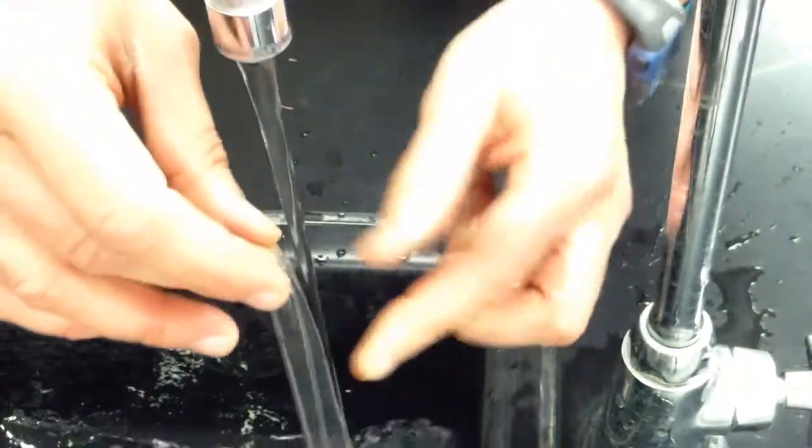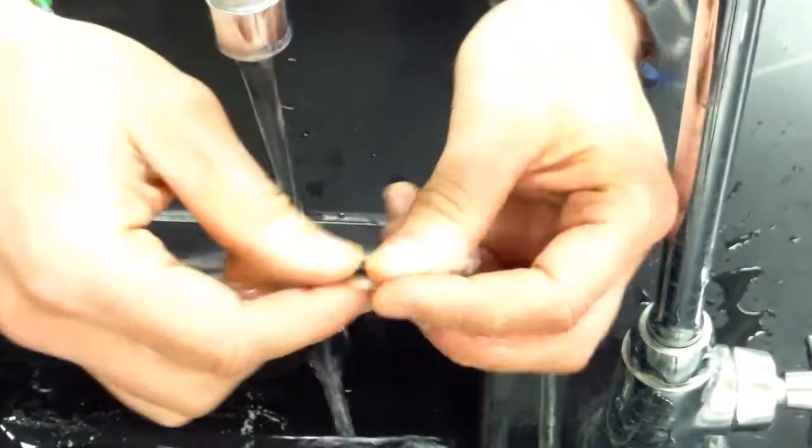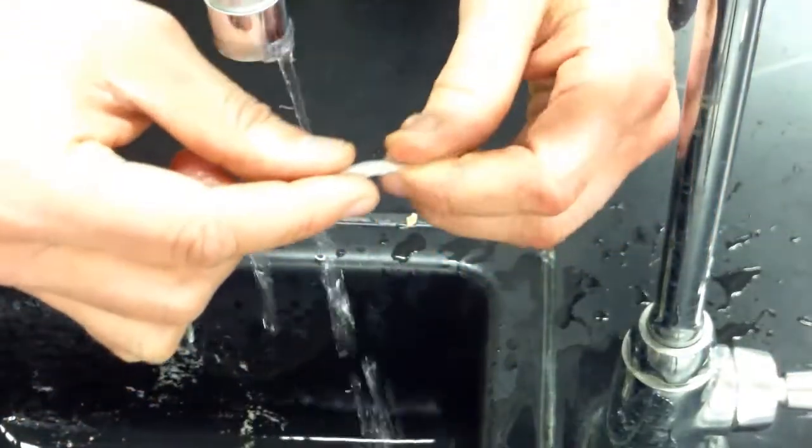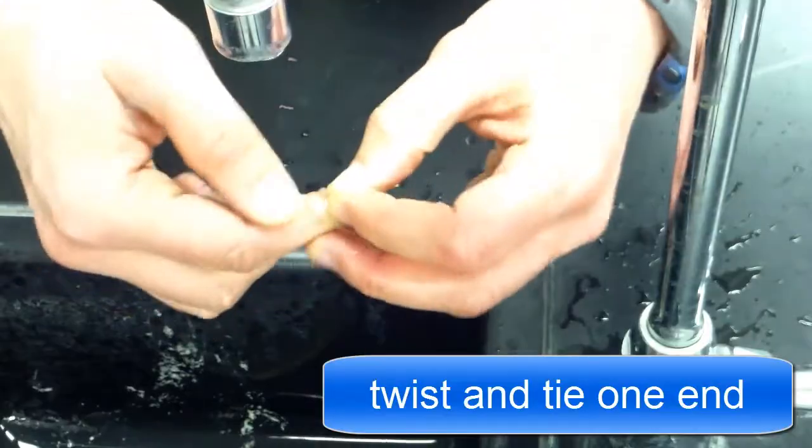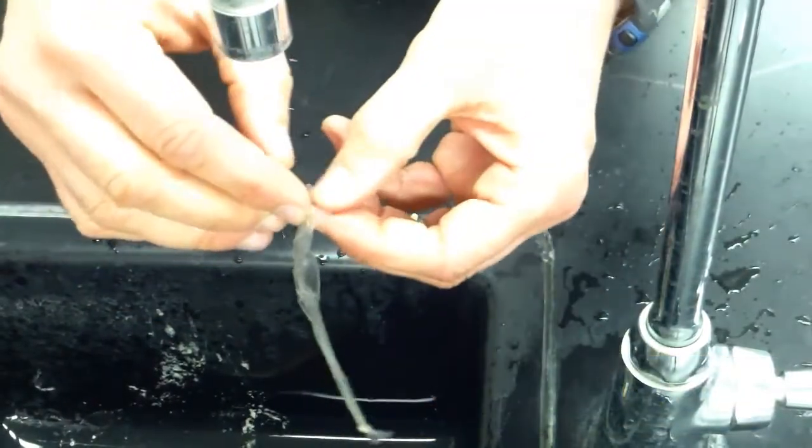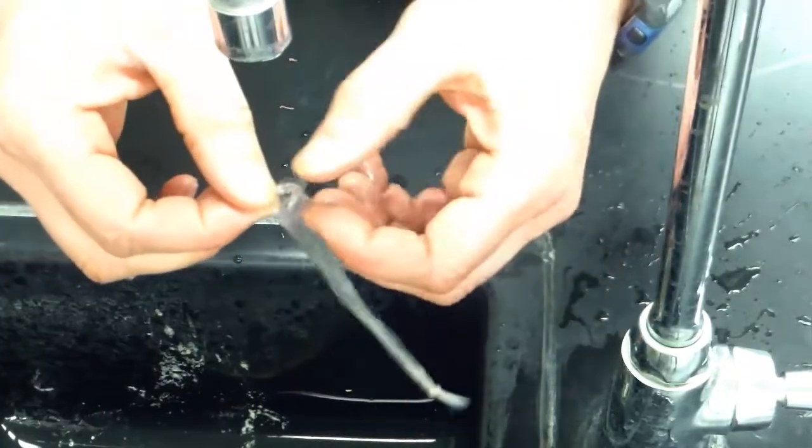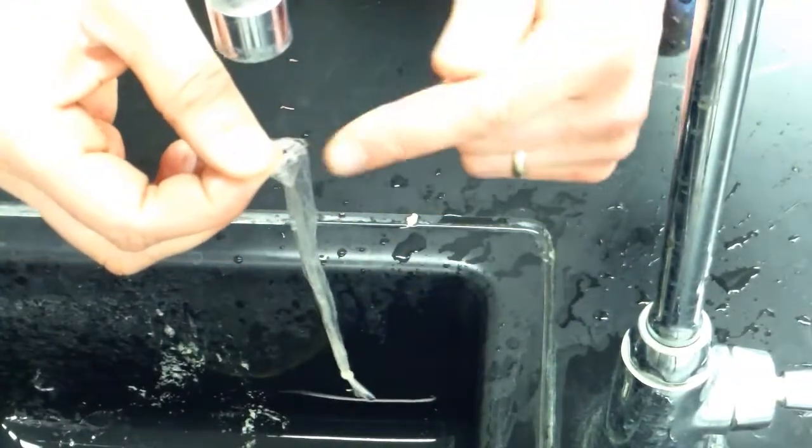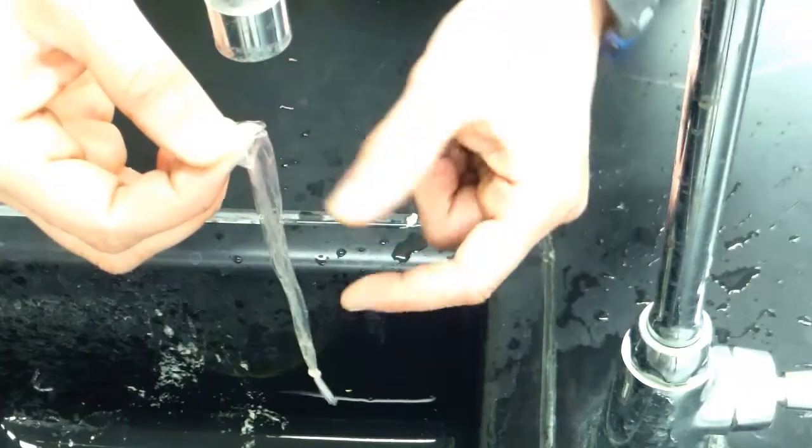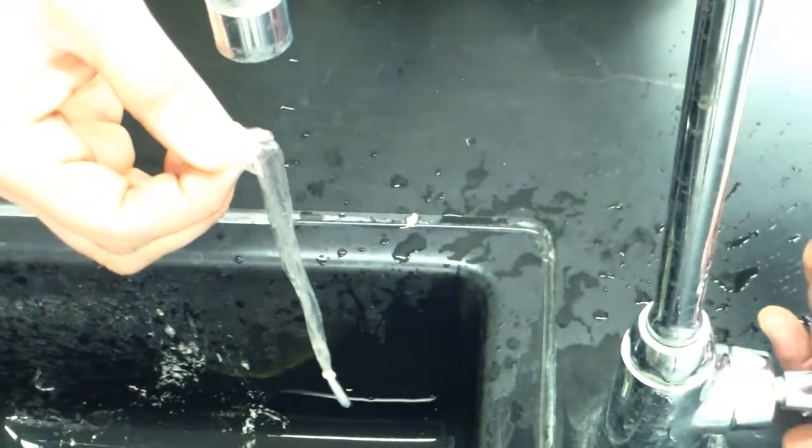Once you get it to this point you can let the water out and then what you want to do on the one end is you want to tie off the end by just making an overhand knot. And now you have a tube that's been tied off on one end and now you can fill the dialysis tubing with the starch solution and the glucose solution and then tie off the other end. So let's go do that.